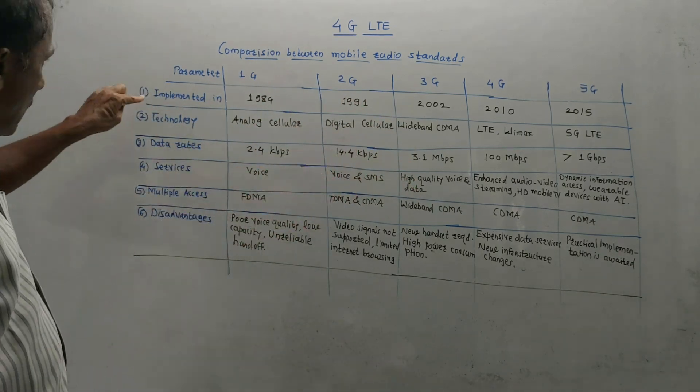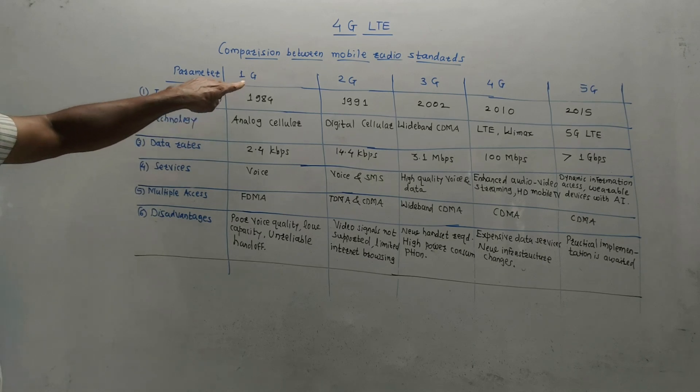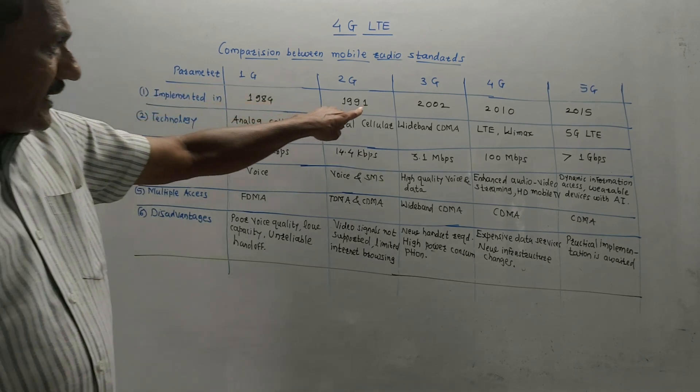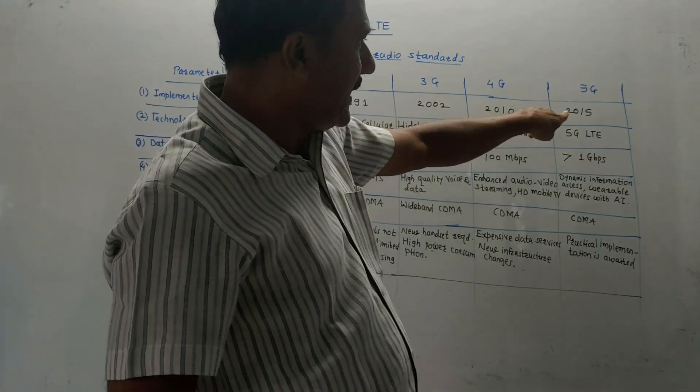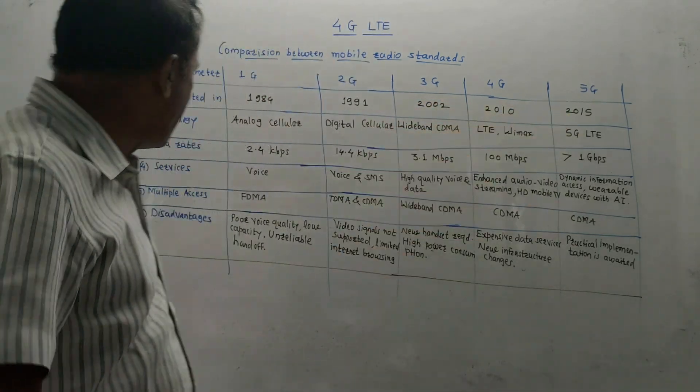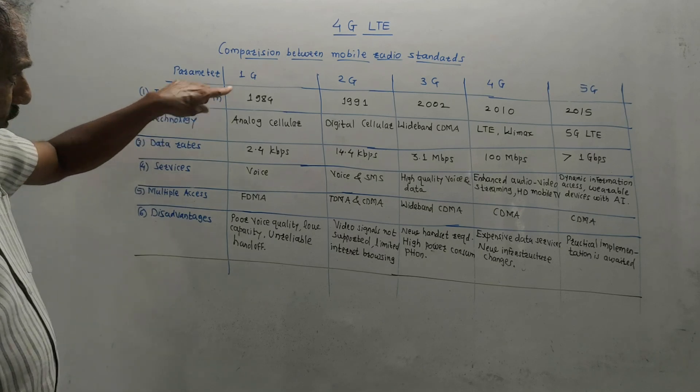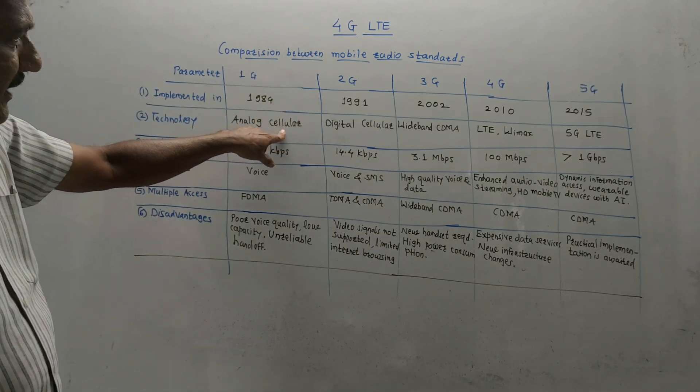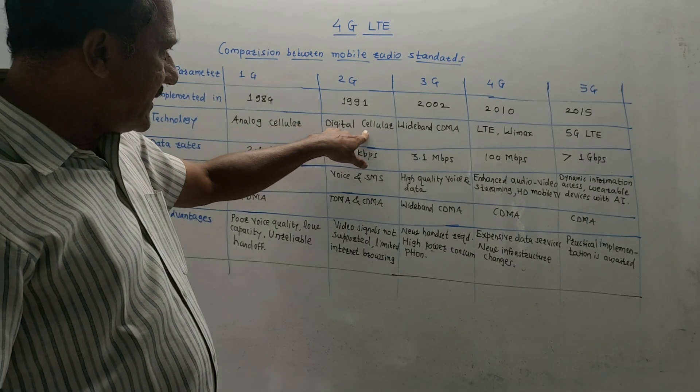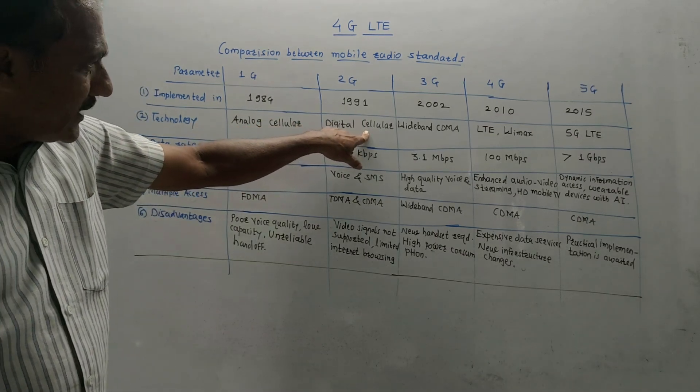The first parameter is implemented year: for first G, 1984, then 1991 second G, third G 2002, fourth G 2010, and fifth G in 2015. Technology used for first generation was the basic analog cellular technology. For second generation, it was digital cellular technology.